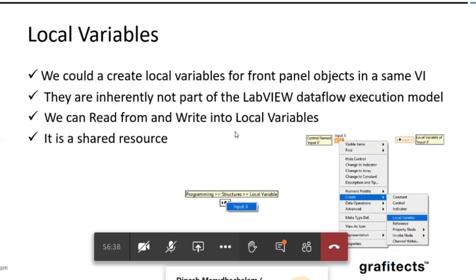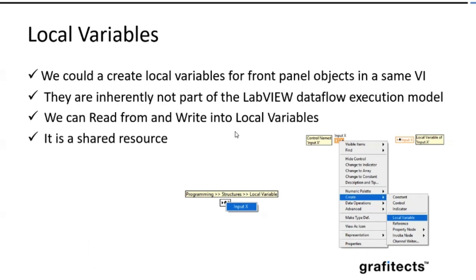As we can see, the local variables - we can able to create a local variable for every terminal that is present in the front panel. Here I can show you how we can create a local variable for the terminals. Either we can right click on it and choose create a local variable, or you can choose a local variable from programming and structures palette and choose what terminal you need to be using. When we create a local variable, it will only appear in the block diagram, not in the front panel. Writing the local variables is the same as passing the data to the terminal. And one more thing is that this is not inherently part of the LabVIEW dataflow execution model. So it will break the execution.